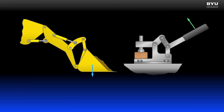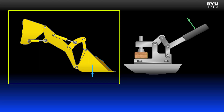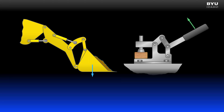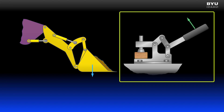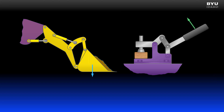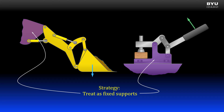Sometimes we will only be analyzing a portion of a machine, such as the bucket mechanism of a front end loader. Only the part of the machine we are to analyze is shown and most of the rest is neglected. Sometimes the machine we are analyzing is connected to a support, such as a clamping mechanism. You should treat these supports as fixed supports — don't bother trying to draw free body diagrams and analyze the forces on the supports, as there will be too many unknowns to be useful.